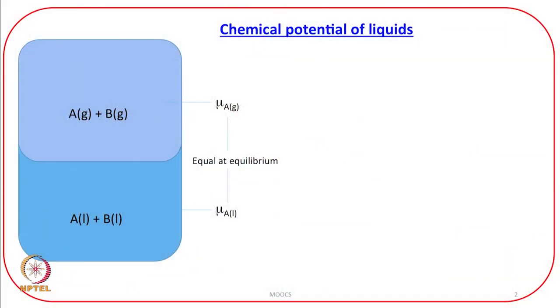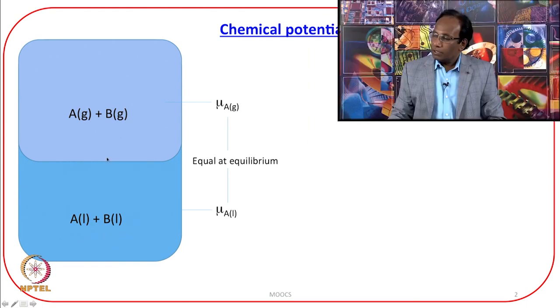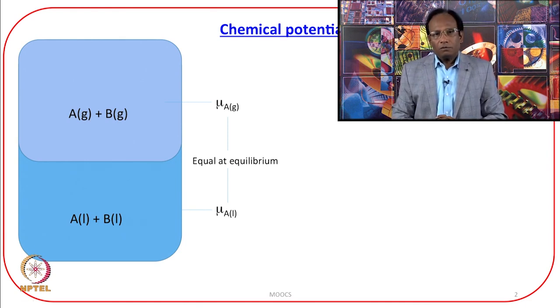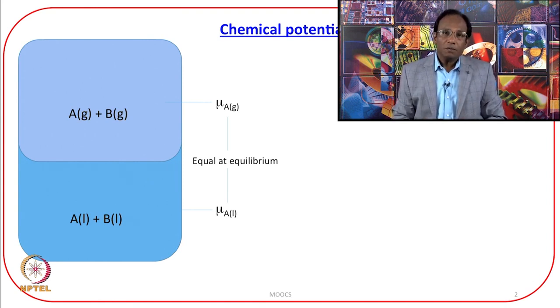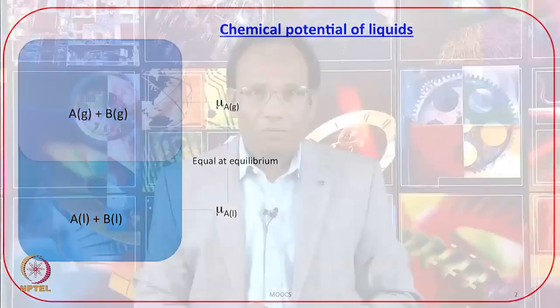Let us consider this figure where the liquid forms of A and B are in equilibrium with their vapors. Whenever there is an equilibrium between different phases of the same substance, remember the word equilibrium: if there is equilibrium, then the chemical potential in each phase of that substance will be the same.